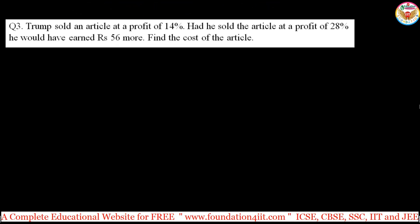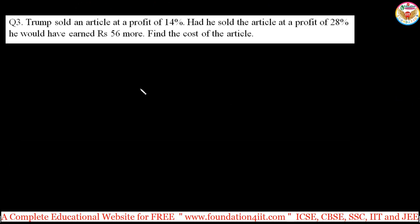Now let us see other shortcut trick questions. Third question — direct method: Trump sold an article at a profit of 14 percent. The condition is: had he sold it at a profit of 28 percent, he would have earned 56 rupees more. If sold with 28 percent profit he gets 56 more. Find the cost price of the article.